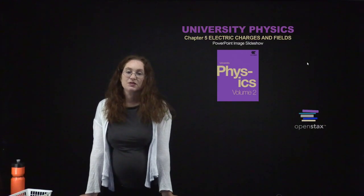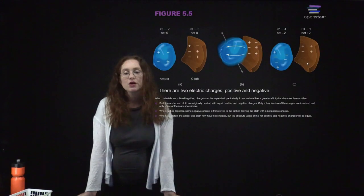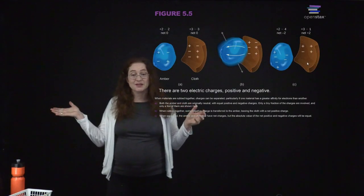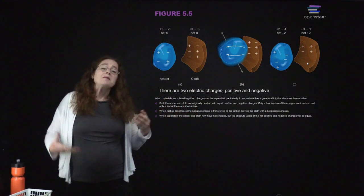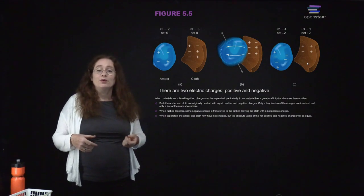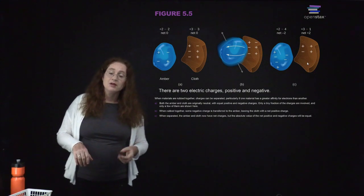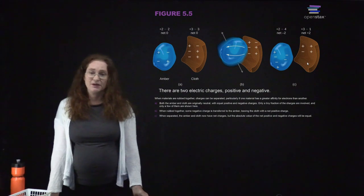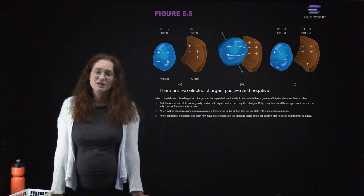Welcome to Electricity and Magnetism. We're going to start by defining electric charges. There are two charges in electromagnetism, and we call them positive and negative. Those are somewhat arbitrary choices of names, but it works out and it makes the math nice and neat. We could have switched the way they're named and the math would be basically the same, just flipping the signs.